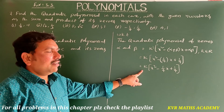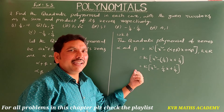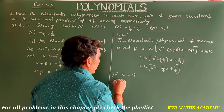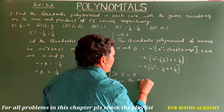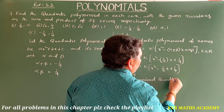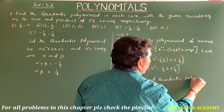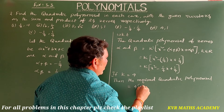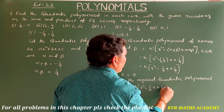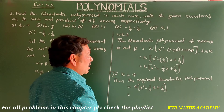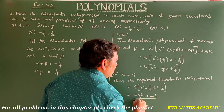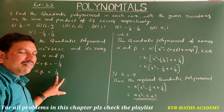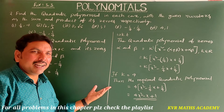Here, denominator 4 is present, so take k=4. The required quadratic polynomial is 4(x² - (-1/4)x + 1/4) = 4x² - x + 1. This is the required polynomial with sum of zeros = -1/4 and product of zeros = 1/4.